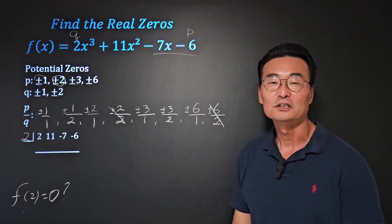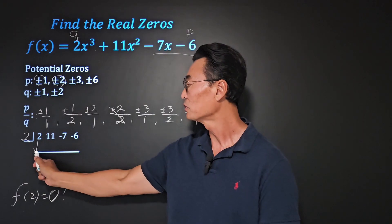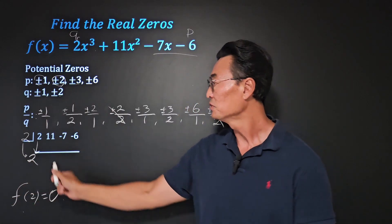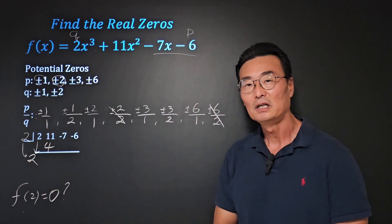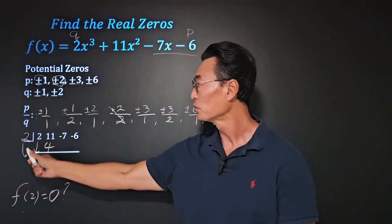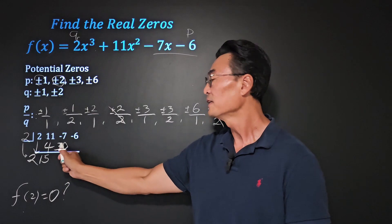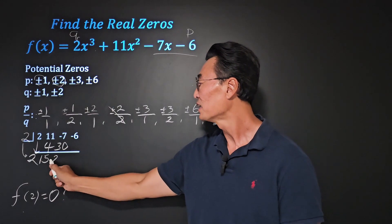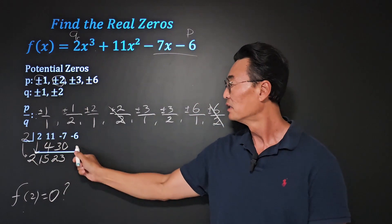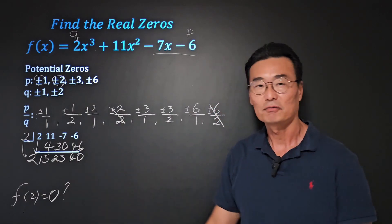To do the synthetic division, we take the first number or the 2, we bring it down, and we multiply the 2 times 2, so we get a 4 here. And we add up and down, and 11 plus 4 is 15. And once again, we'll take that 2, multiply by 15, where we get a 30. If we add up and down once again, we get a 23. And then 2 times 23 is 46. Add up and down, and we end up getting a 40.